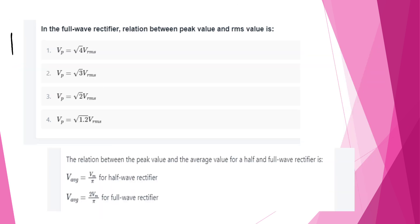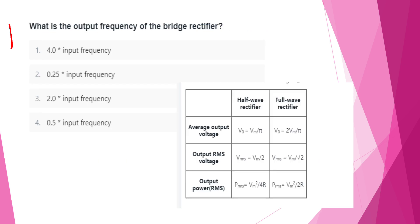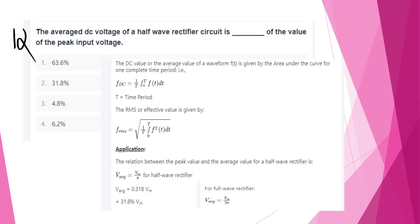For a full-wave rectifier, the relation between peak value and RMS value: Vp = √2 × Vrms, option C. Output frequency of bridge rectifier = 2 × input frequency, option B. Average DC voltage of a half-wave rectifier circuit = Vm/π = 0.318 × Vm = 31.8% of peak input voltage.